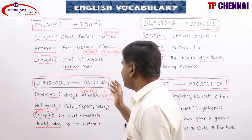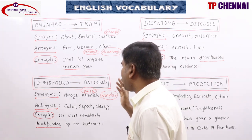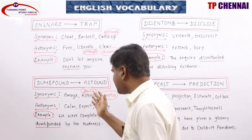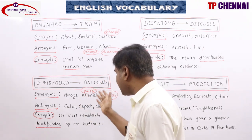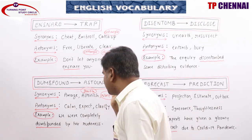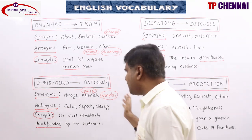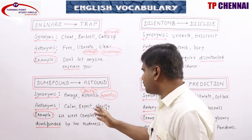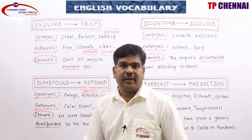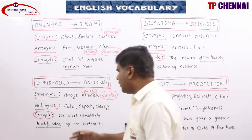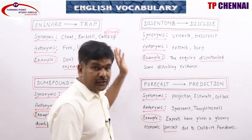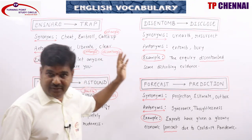Dumbfound means very much surprised and confused. Synonyms: astound, amazed, startled, astonish, nonplus (n-o-n-p-l-u-s), bewilder, stunned, flabbergast. Antonyms: calm, expect, clarity, enlighten, explain, layout. Example: We were completely dumbfounded by her rudeness — not expected, very much surprised.